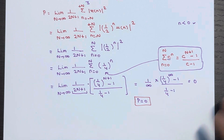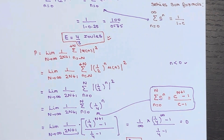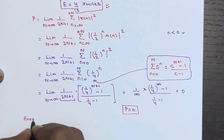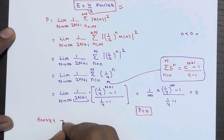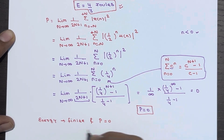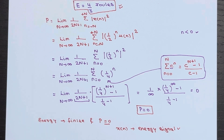So we found that the energy is finite — equal to 4/3 joules — and the power is 0. If the energy is finite and power is zero, x(n) is called an energy signal. In the next lecture we'll see more numericals based on energy or power signals. Thanks for watching — please ask any doubts in the comment section and don't forget to subscribe.